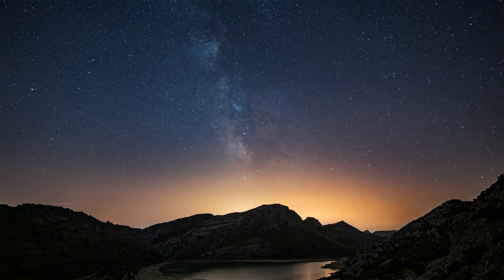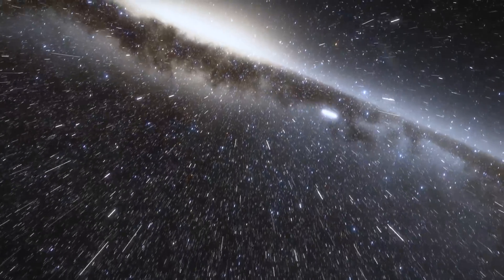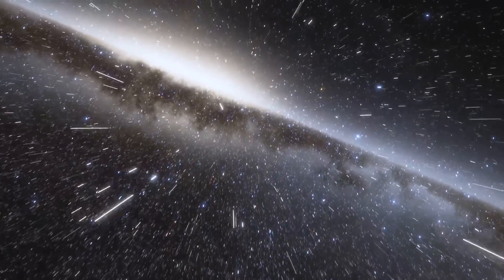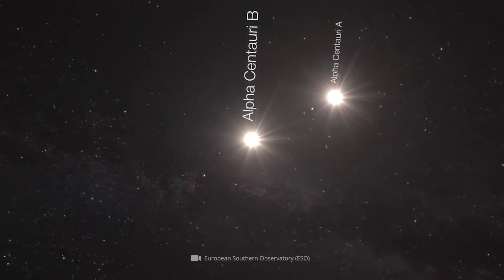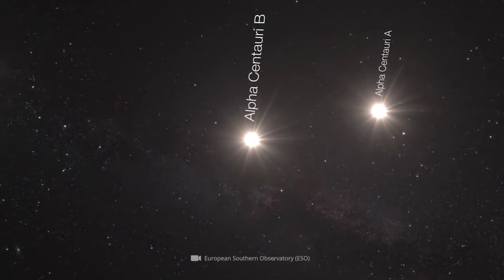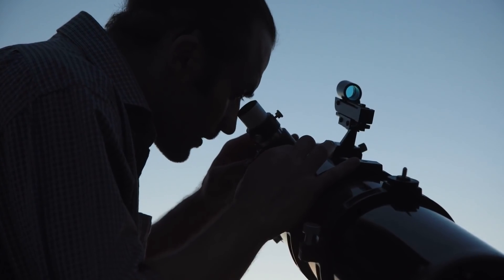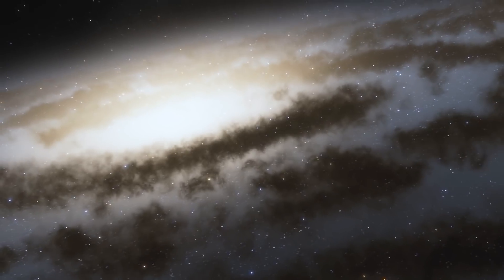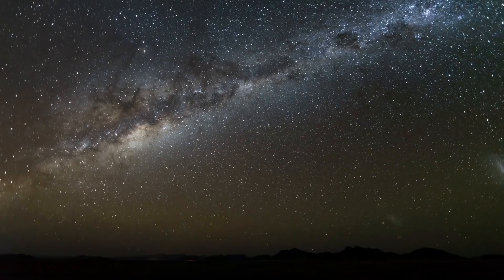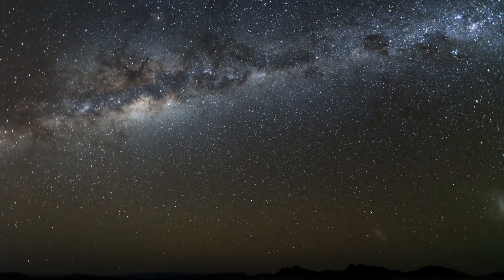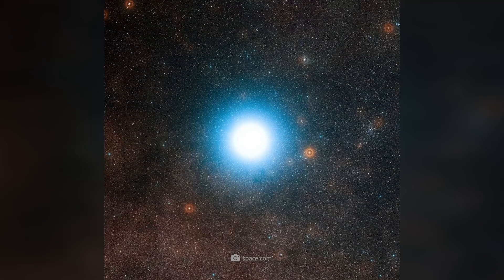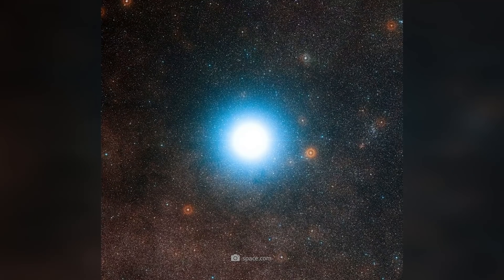If you want to examine the double star with the naked eye, you will not be able to see that it consists of two different components. As a telescopic object, the true composition of Alpha Centauri can only be revealed with the help of a telescope. As a star of the first magnitude class, the double system is the third brightest object in the firmament, whereas Alpha Centauri A is the fourth brightest star in the night sky.